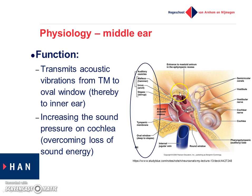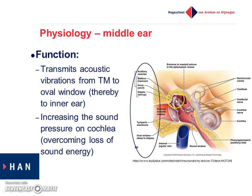So one last time — the function of the middle ear. The working of the three little bones — malleus, incus, and stapes — together with the two muscles, the stapedius muscle and the tensor tympani muscle, is to transmit acoustic vibrations that get onto the tympanic membrane to the oval window and thereby to the inner ear. Sound waves reach the tympanic membrane, which moves and passes those vibrations mechanically through the three little bones onto the oval window behind the stapes, and from there sounds are transmitted to the inner ear. The hearing part of the inner ear is the cochlea.